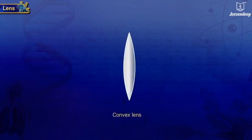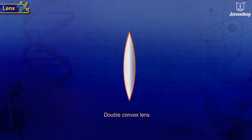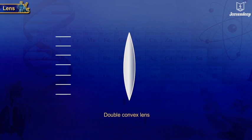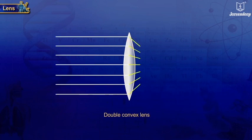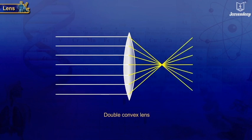A convex lens is a lens having both spherical surfaces bulging outwards, also called a double convex lens. It is thicker in the middle than at the edges. This lens can converge the light incident on it.